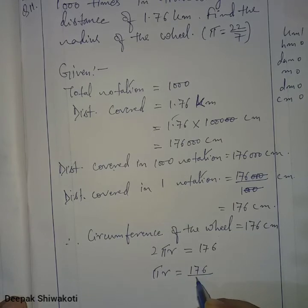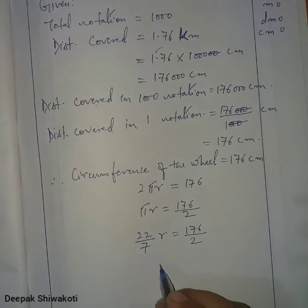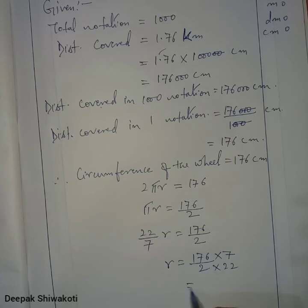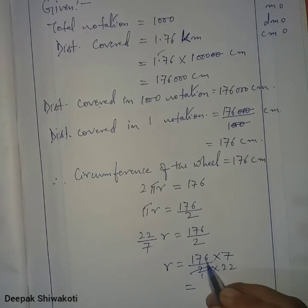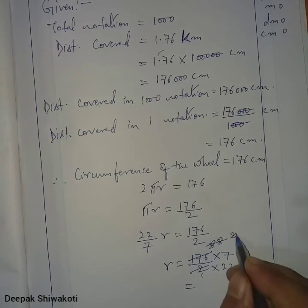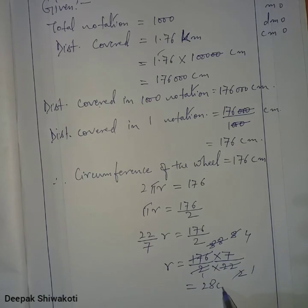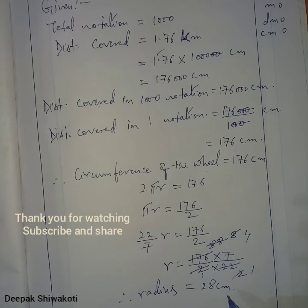Since circumference = 2πr = 176, we get πr = 176/2 = 88. With π = 22/7, we have (22/7) × r = 88, so r = 88 × 7/22 = 616/22 = 28 centimeters. Therefore, the radius of the wheel is 28 centimeters.